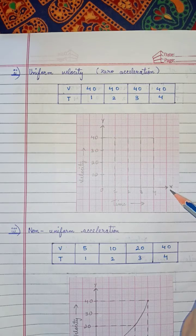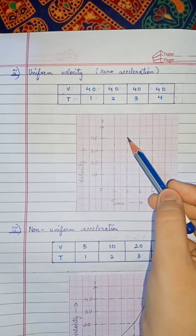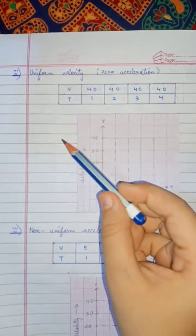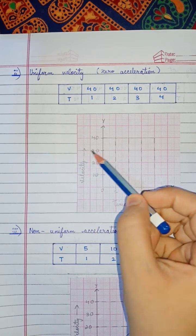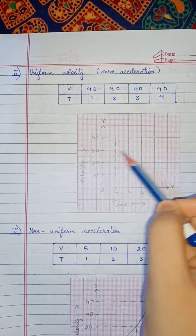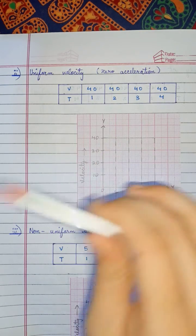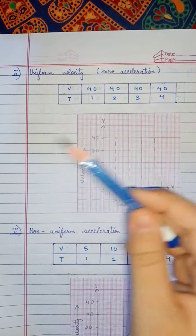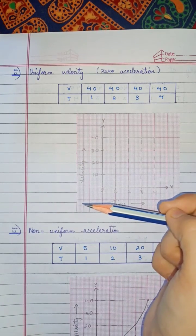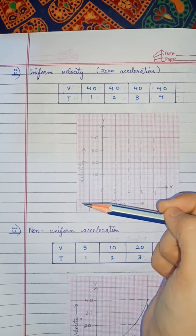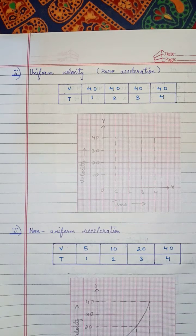So you are getting a straight line which is parallel to the x-axis. In this case we can say that the object is having uniform velocity with zero acceleration. I hope you understood this. If you have any query you can ask me in the comment section below, and don't forget to like, share, and subscribe. Thank you.